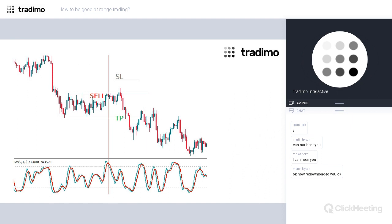Returning to the logic of range trading and summarizing: we can't say there are a lot of special features to range trading. The key idea is to go with the logic, and on the basis of this logic we may have different trade systems with different instruments. Firstly, we define the range. Then we check whether the market is overbought or oversold and check for reversal price patterns. Then we set up the trade: take profit, stop loss, and position size according to the level of risk we can allow ourselves.